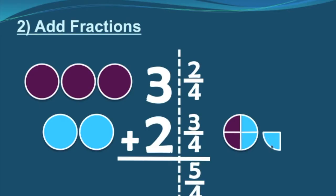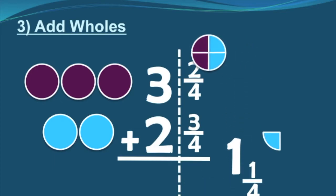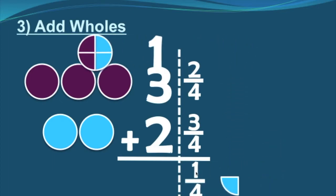Two fourths plus three fourths gives us five fourths. But remember, that's an improper fraction — we're never supposed to leave our answer as an improper fraction. So let's take that five fourths and change it to a mixed number, which gives us one and one fourth. Since this is the fraction side but we have a mixed number, we're going to carry. We carry the one whole to where the wholes are, and keep our one fourth here. Now all we have to do is add our wholes: one plus three is four, four plus two is six. So our answer is six and one fourth.